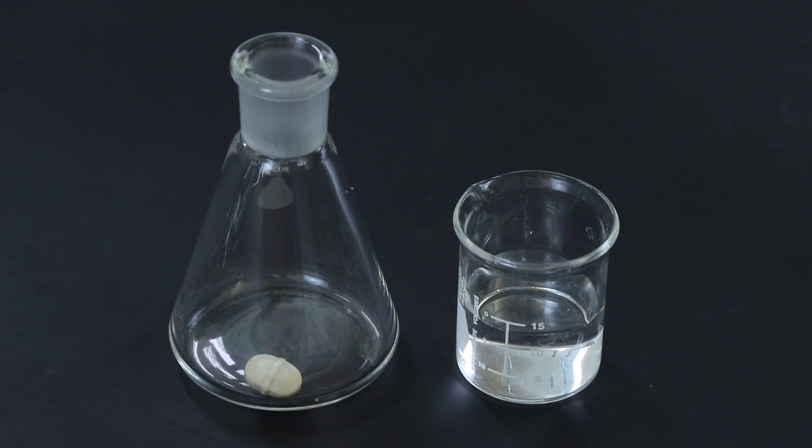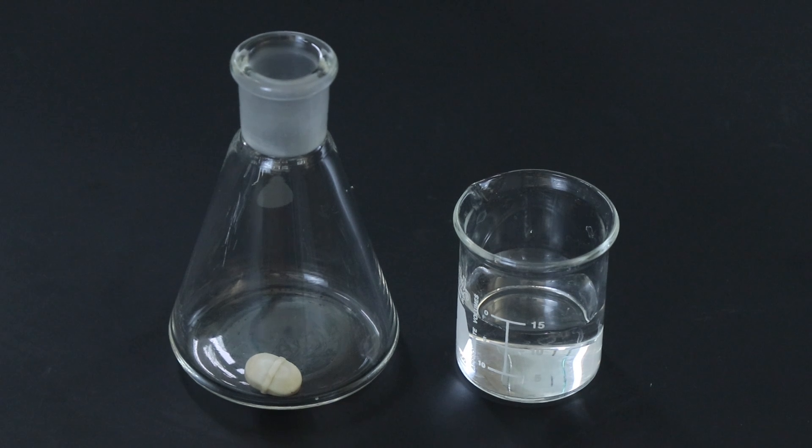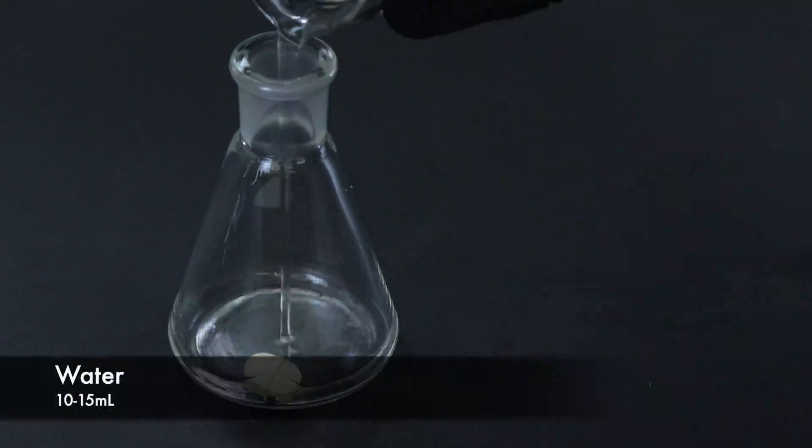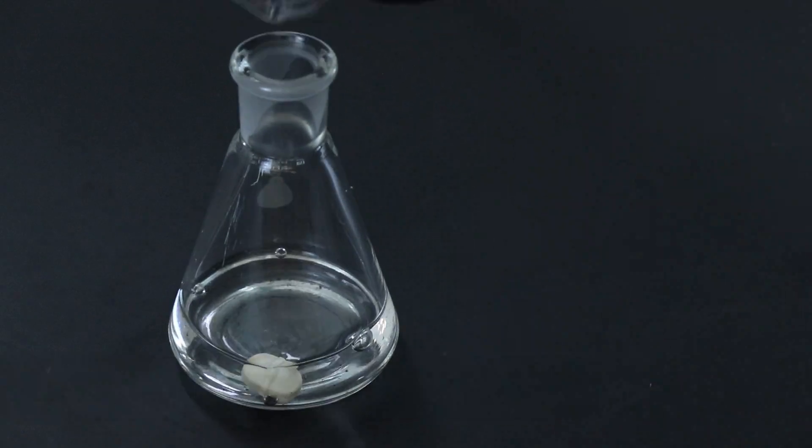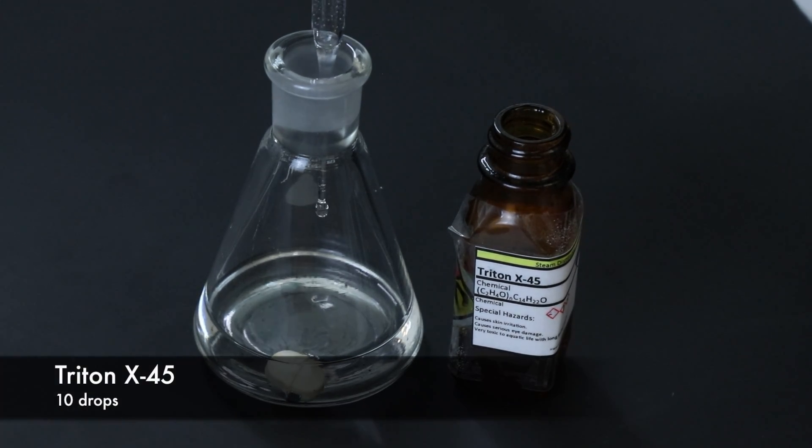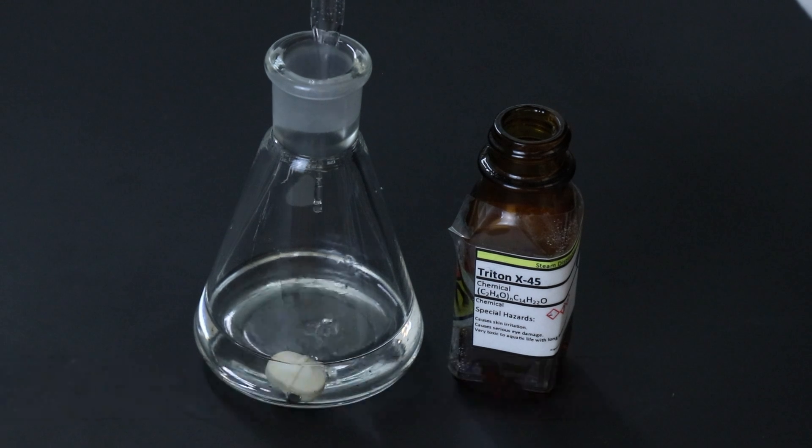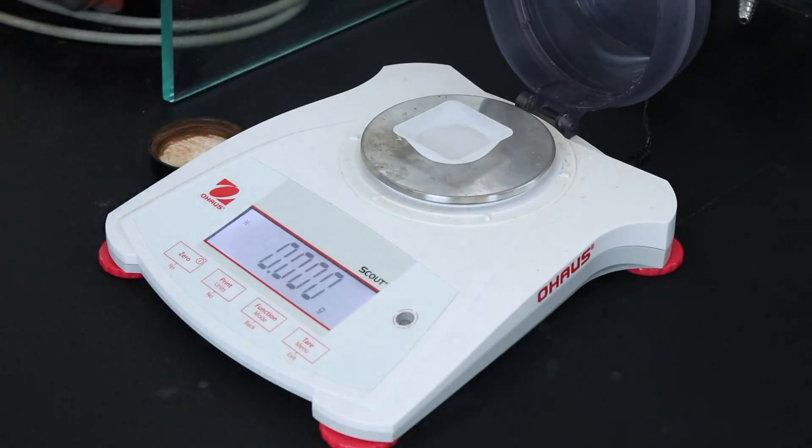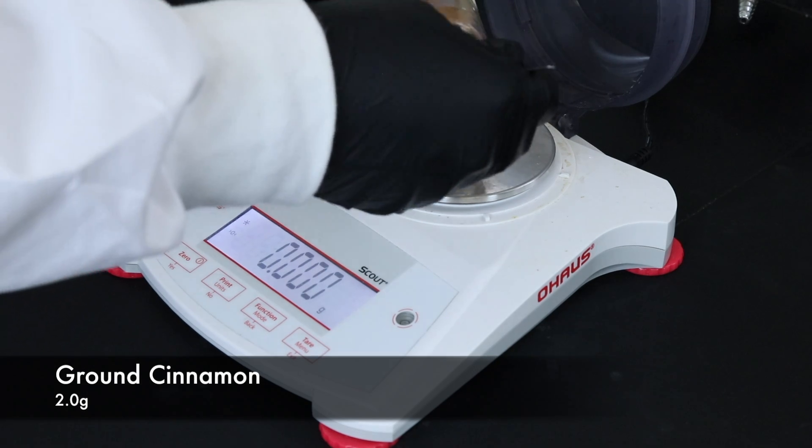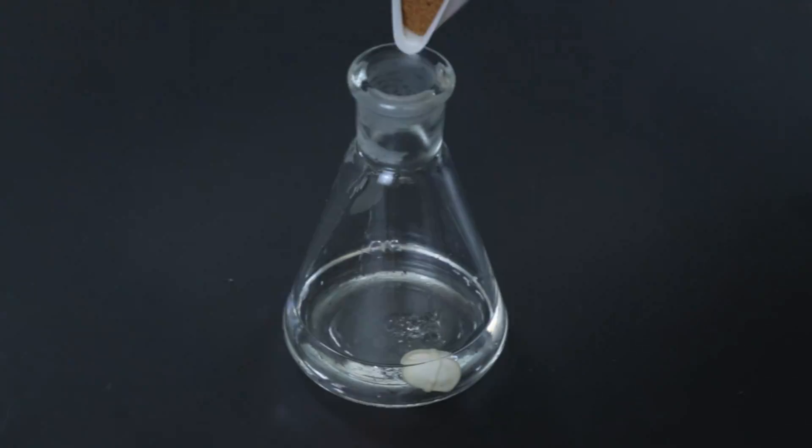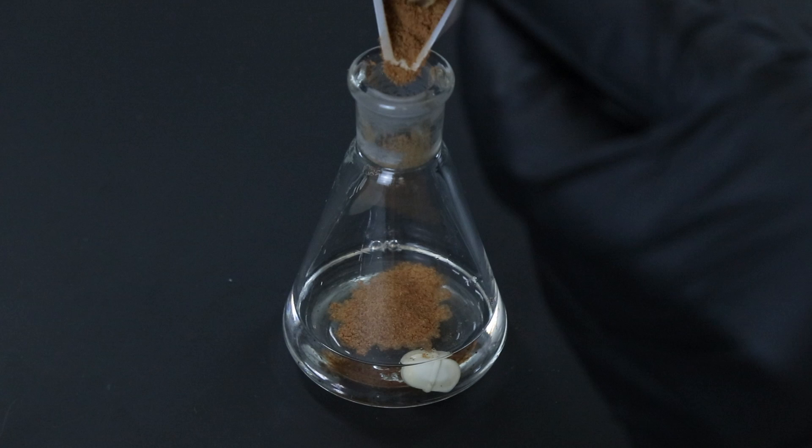Okay here is the Erlenmeyer flask rented from the stockroom. I've already placed a spin bar inside so now I'll add between 10 and 15 milliliters of water. Then I'll add 10 drops of the Triton X-45, doing all of this before adding the cinnamon because adding the cinnamon last can help keep it from burning on the bottom of the flask initially. Now I'll weigh out about two grams of the ground cinnamon, noting exactly how much is weighed so a percent recovery can later be calculated, and I'll just add that on top of the water in the flask.